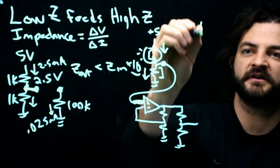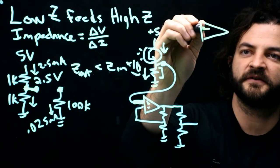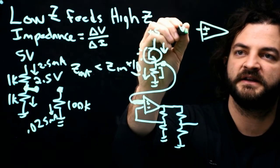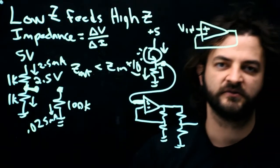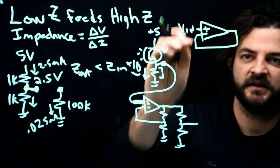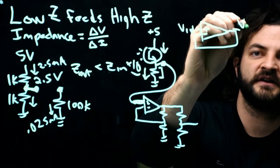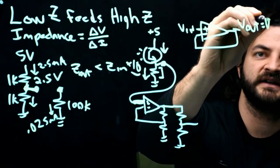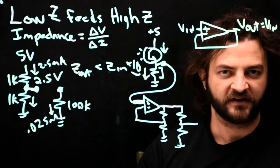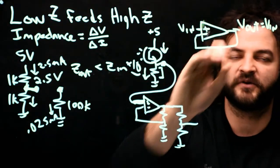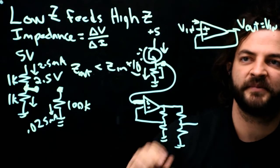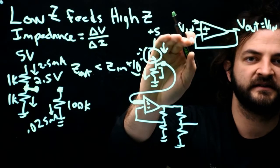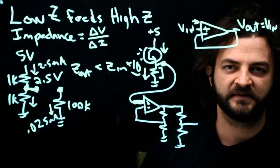So a very common op amp circuit that we'll see all the time is called the buffer. V in goes to the non-inverting side. V out is connected directly to the inverting pin. There are no resistors, and the equation is V out equals V in. Essentially, this circuit does nothing, because the V out is the V in, and it might as well be a wire, except we know that no current goes into the op amp, so its input impedance is infinity. It has the largest input impedance that we can imagine.